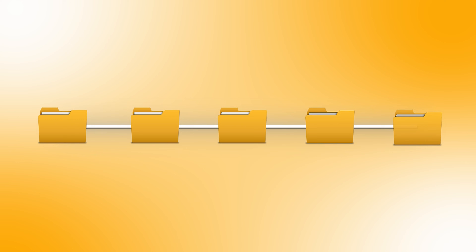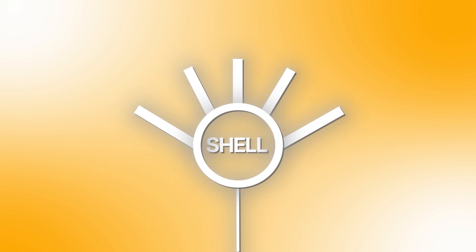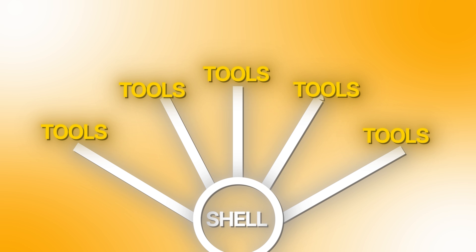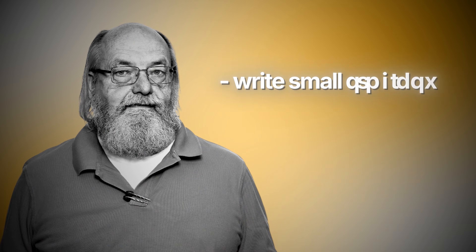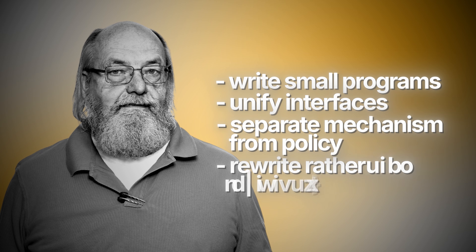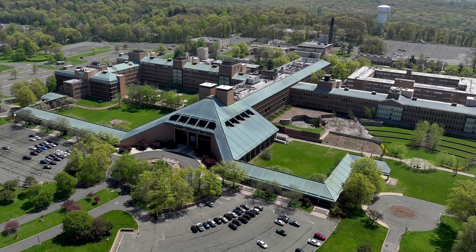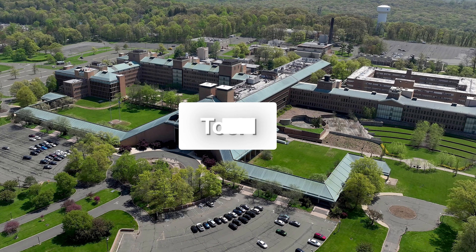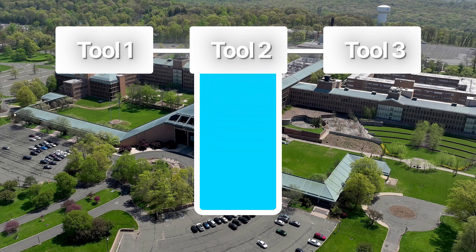By the early 1970s, Unix had a distinct identity: a hierarchical file system, a handful of simple system calls, a shell built for composition, and small focused tools that communicated through text. It reflected Thompson's philosophy — write small programs, unify interfaces, separate mechanism from policy, and rewrite rather than layer complexity. Inside Bell Labs, this approach became cultural: teams built pipelines of tools instead of monolithic programs, and text became the universal interface.